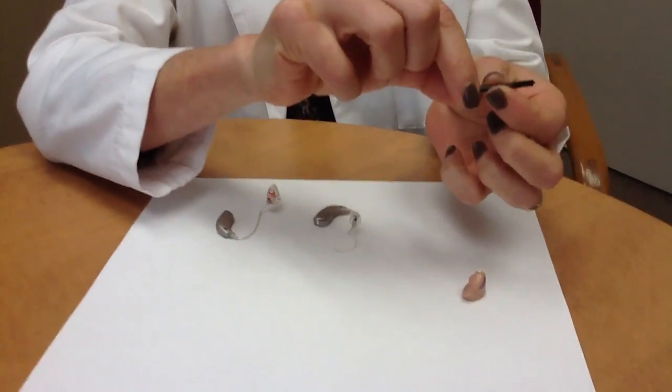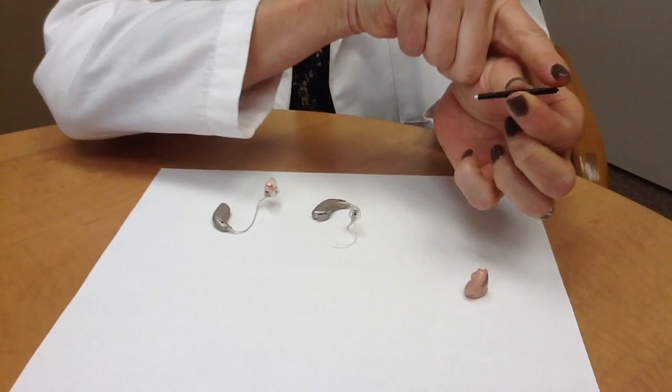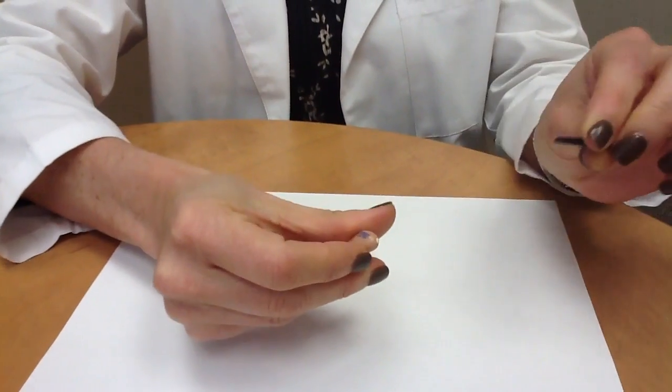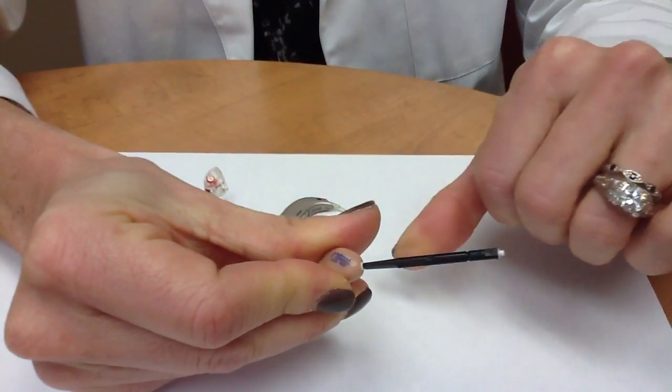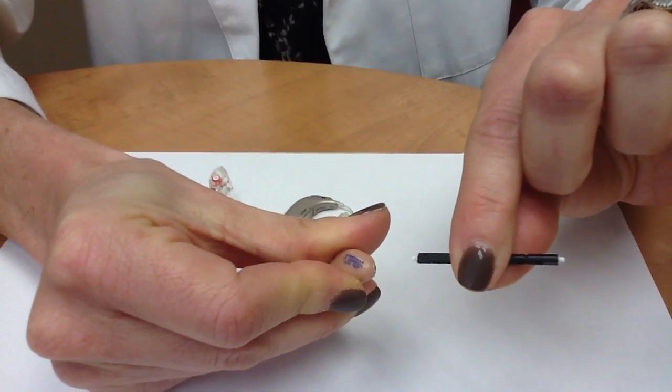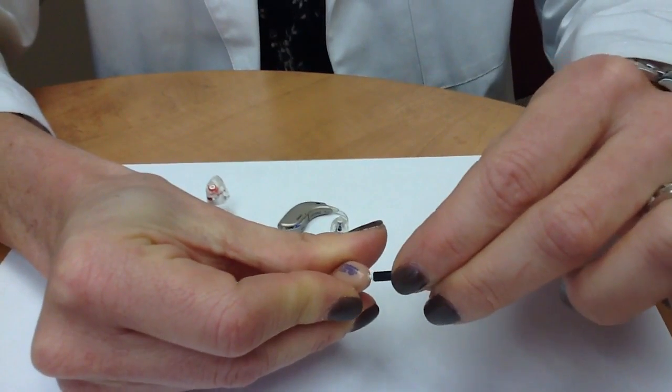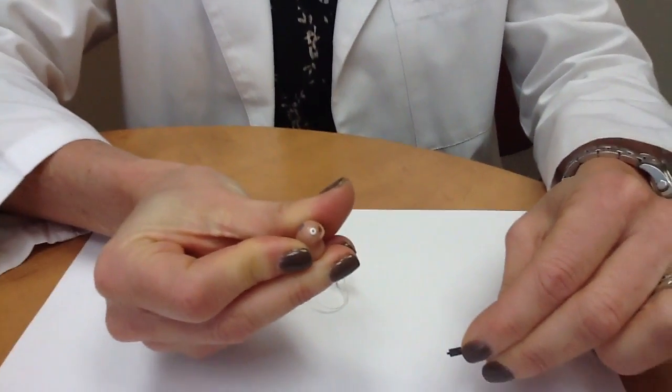Each new stick has a new wax guard on one side and a removal side on the other. To take the old one out, you simply put the removal side into the wax guard, give it a little twist, and it pulls out very easily. You then flip the wax guard over to a new one, line it up, simply push in and pull out, and it stays.